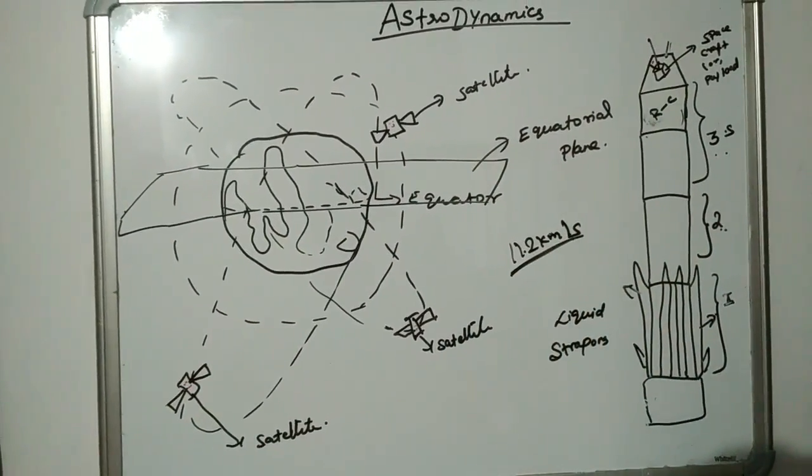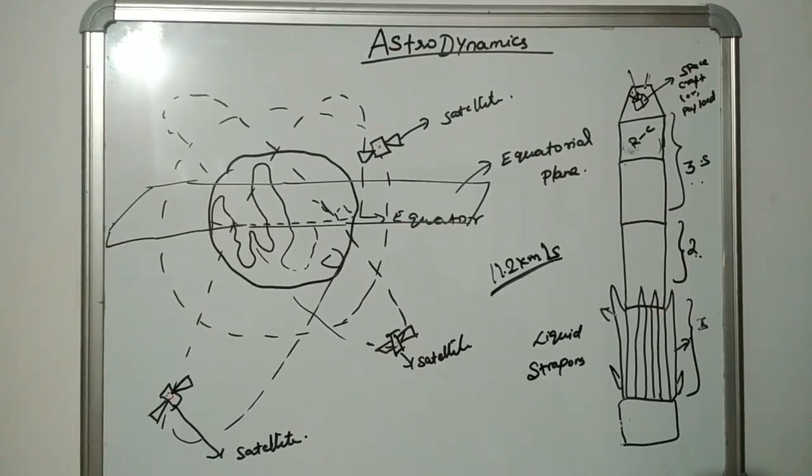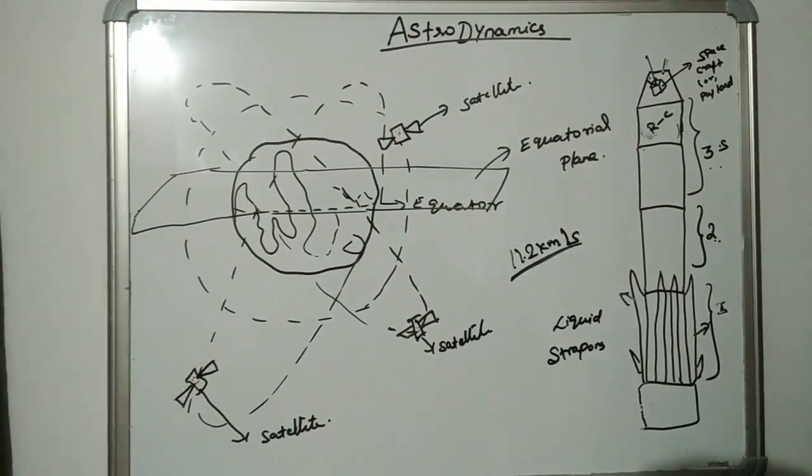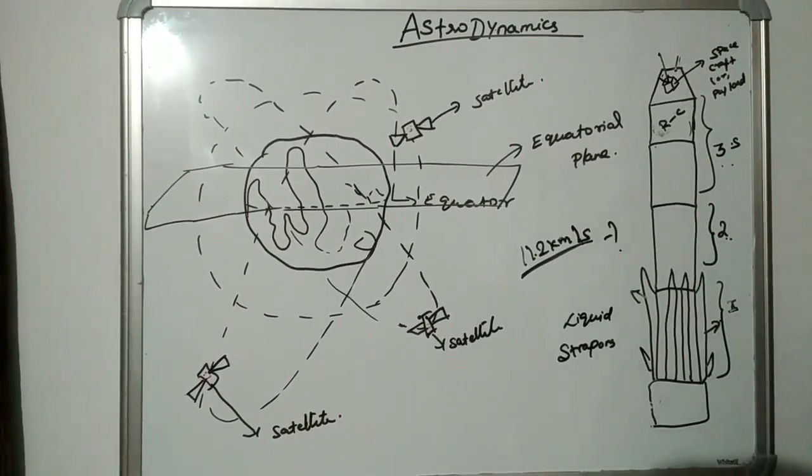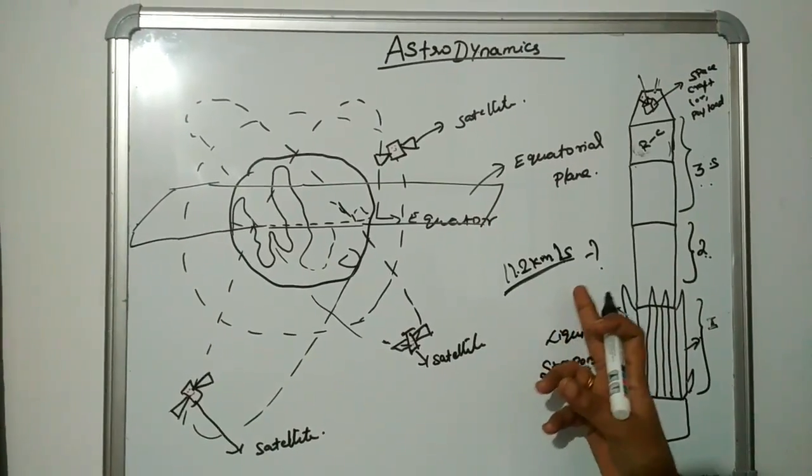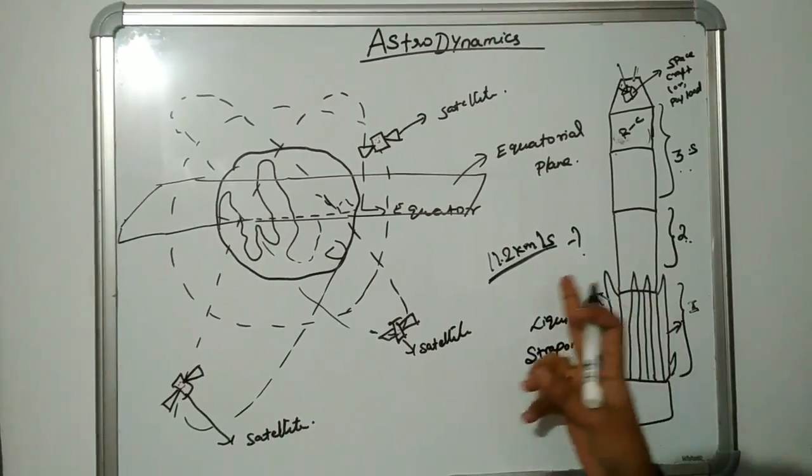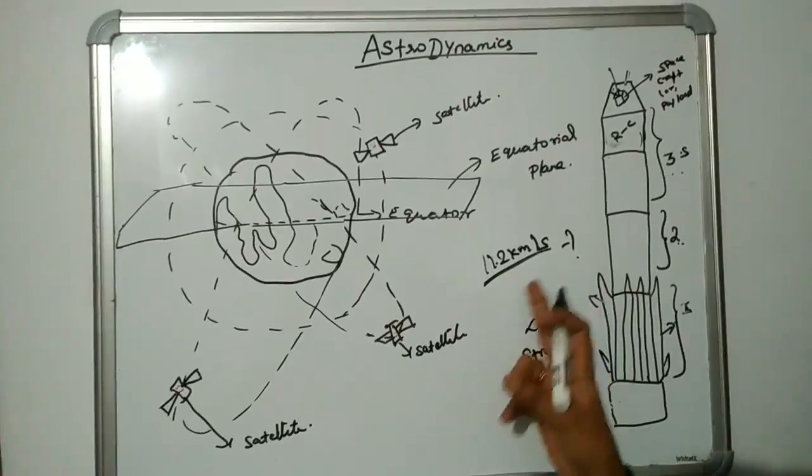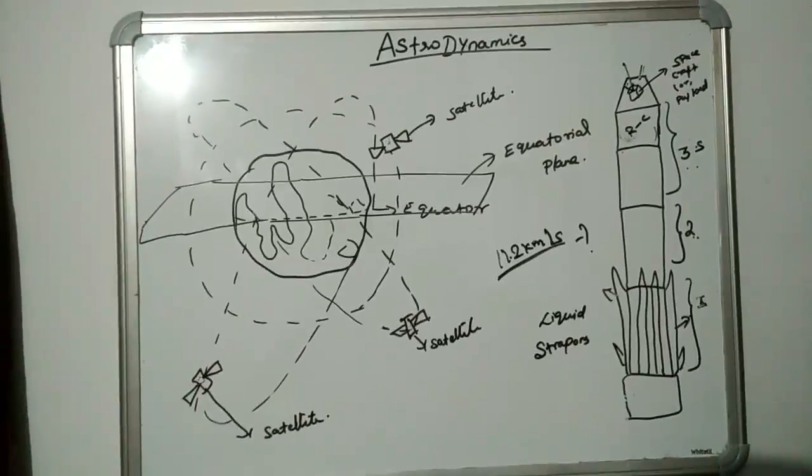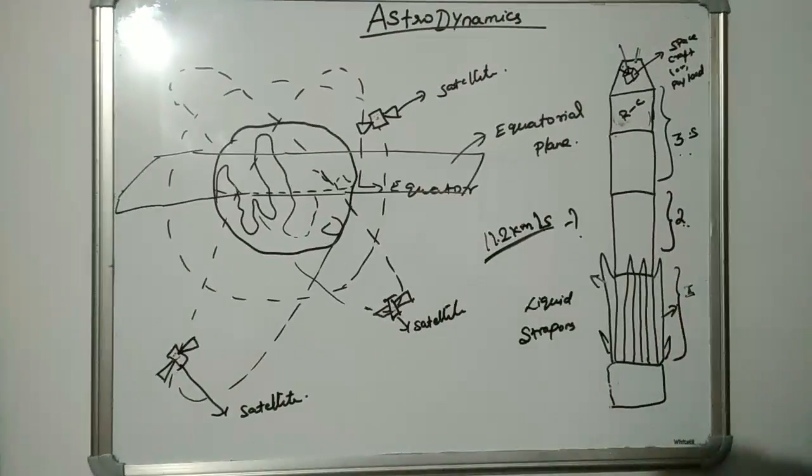It has to travel at least at 11.2 km per second. Why this speed? You can imagine how high this speed is. The rocket has to travel at 11.2 km per second to escape from the Earth's gravitational force.